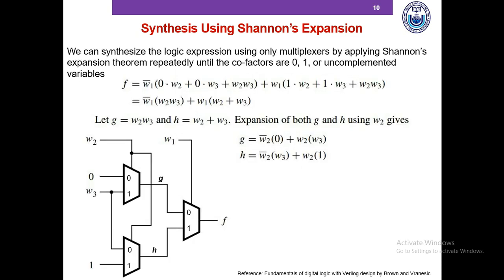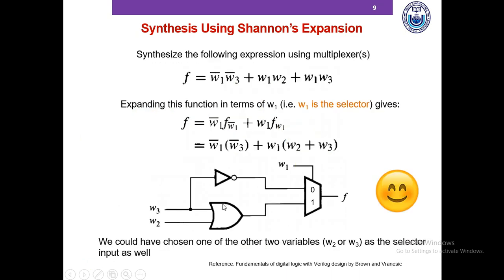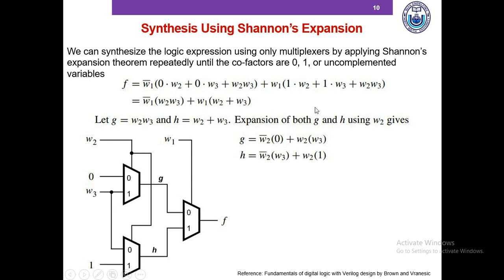So far we have learned to implement a Boolean expression using 2-to-1 multiplexers. But what if we want to implement a logic expression using only multiplexers, with no other logic gates? Going back to the original example, we have W1_bar times cofactor W2·W3, plus W1 times cofactor W2+W3. To stop here would require AND and OR gates to implement those sub-expressions.